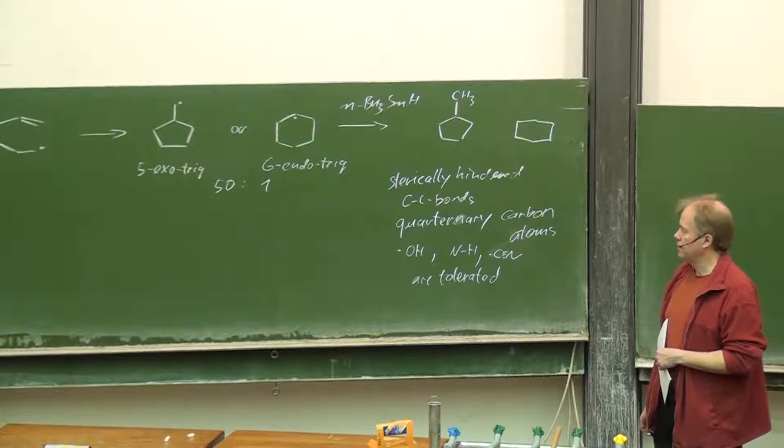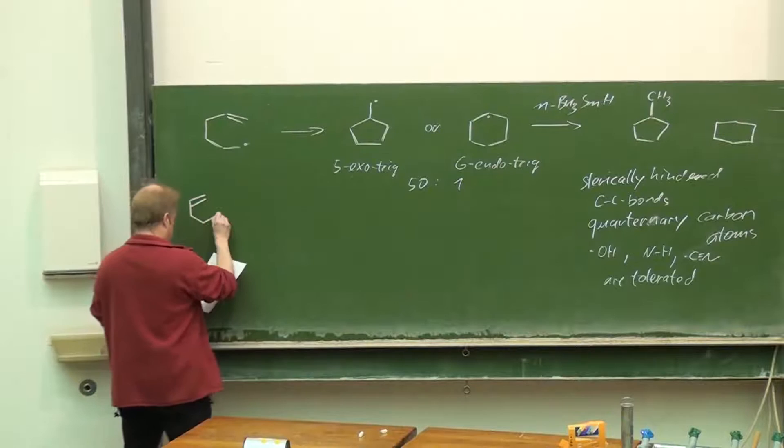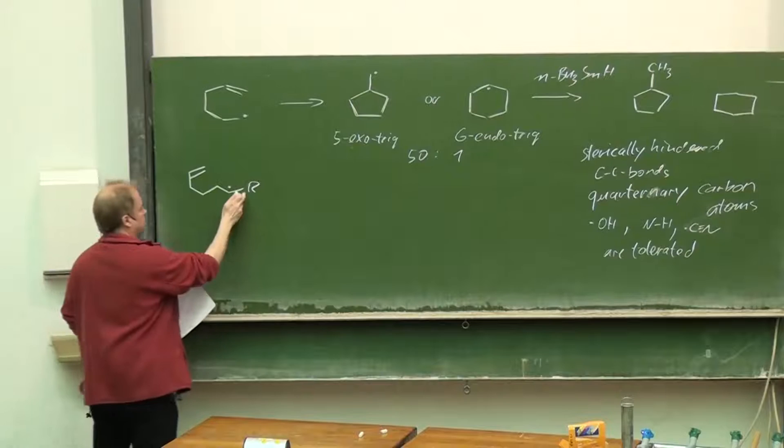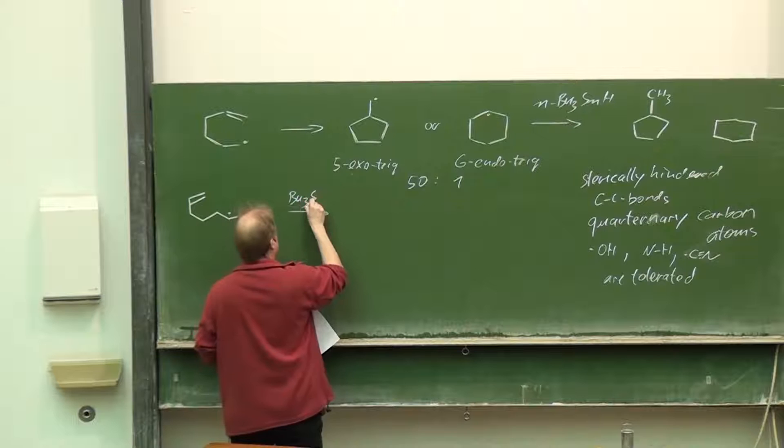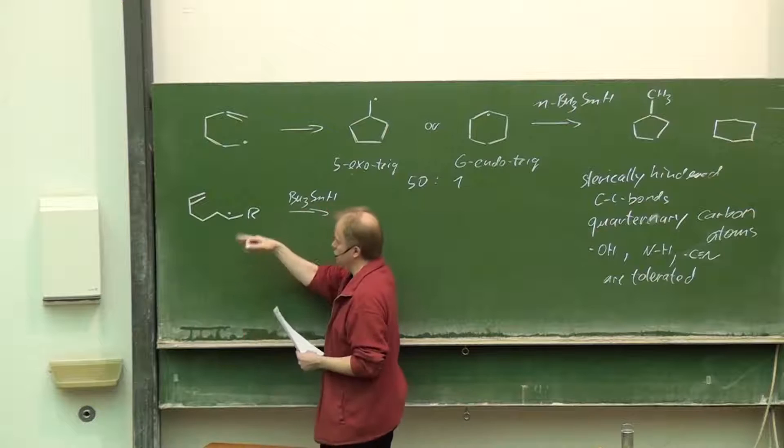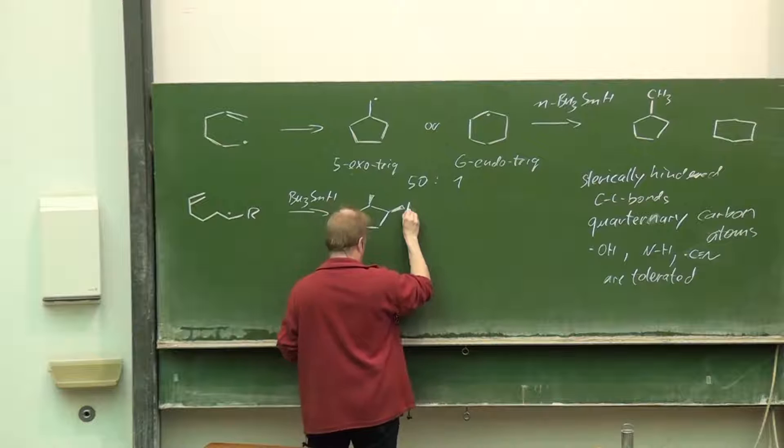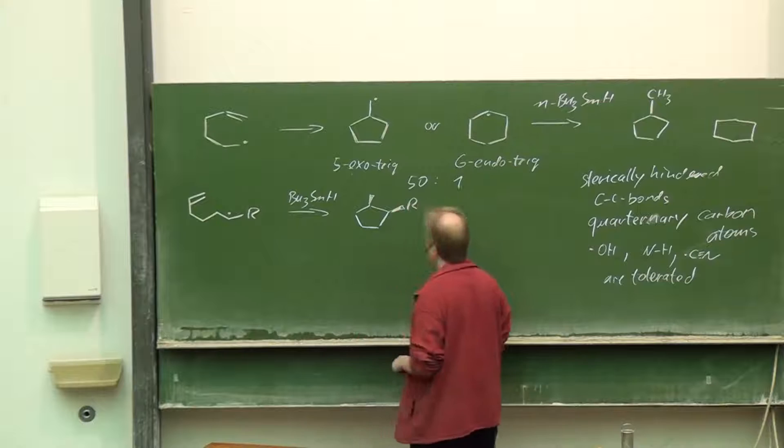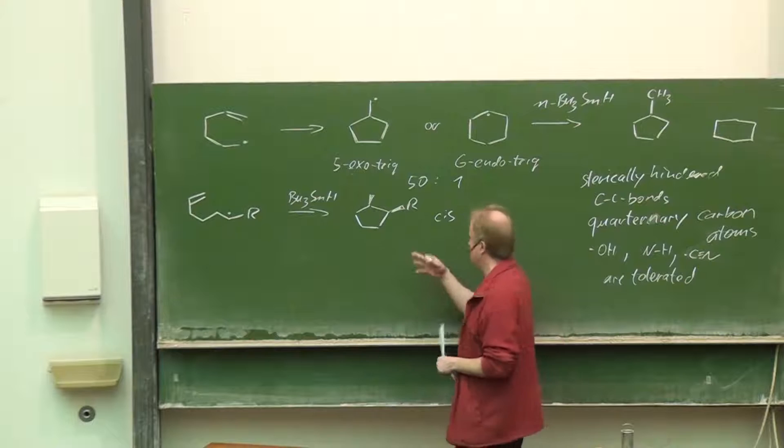Additionally, frequently a high diastereoselectivity is observed. Let's assume we have an additional substituent R here, another alkyl group, for instance. Again, trapping with a tin hydride, preferentially again the five-exo-trig cyclization. The cis product will be preferentially formed, of course, diastereoselectively, not enantioselectively. You have a raceme here.